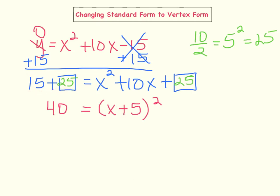15 plus 25 is 40. And on the right side of my equation, I take the square root of the first term — the square root of x squared is x. Then I take the square root of the third term — the square root of 25 is 5. I use the operation that was in the original binomial, so I put a plus in the middle. Then I put my parentheses and square it.